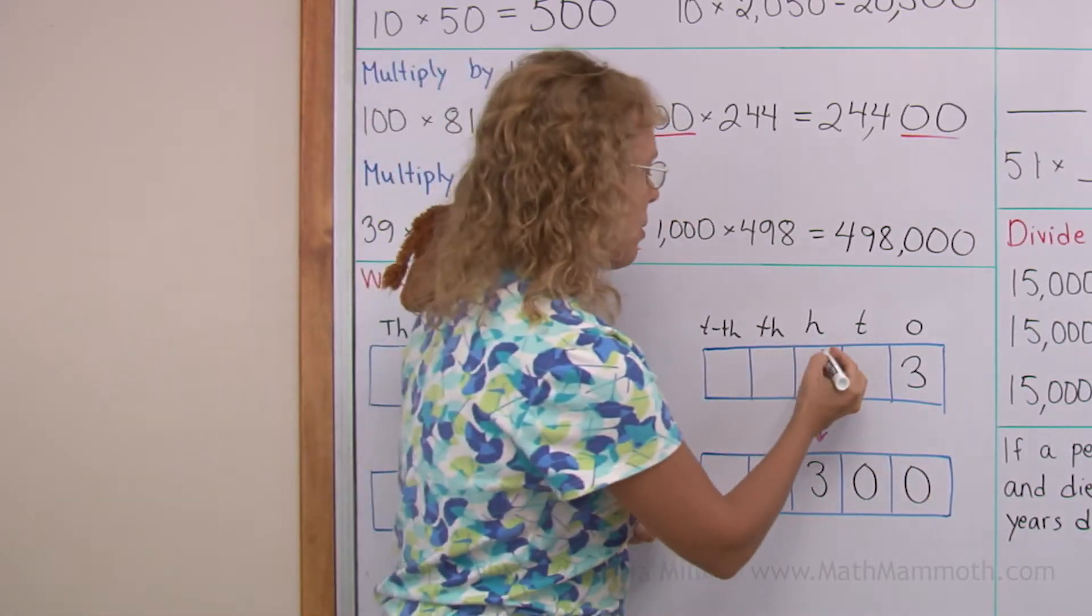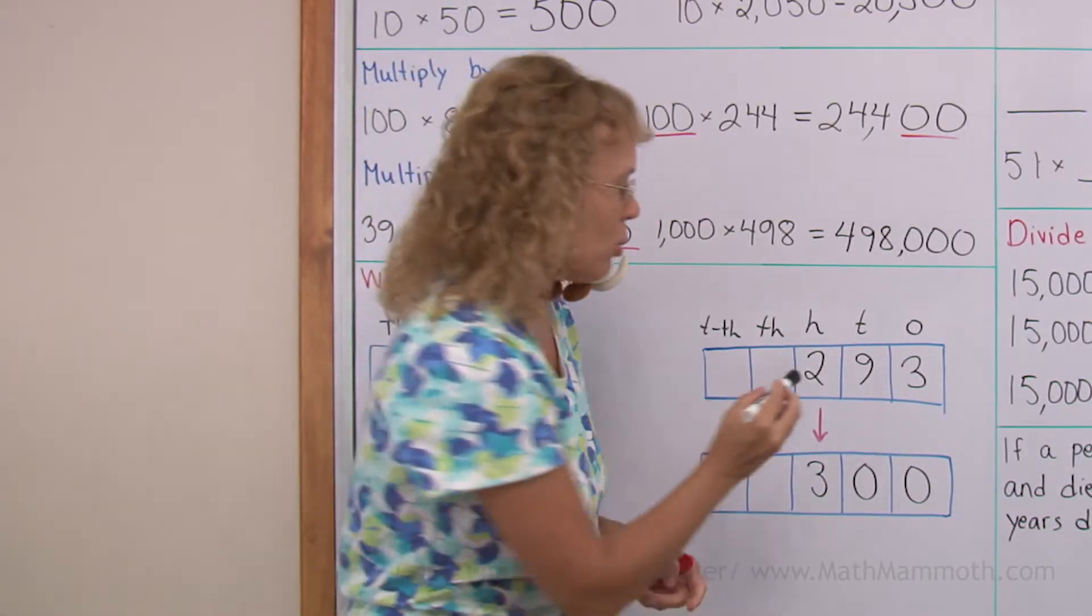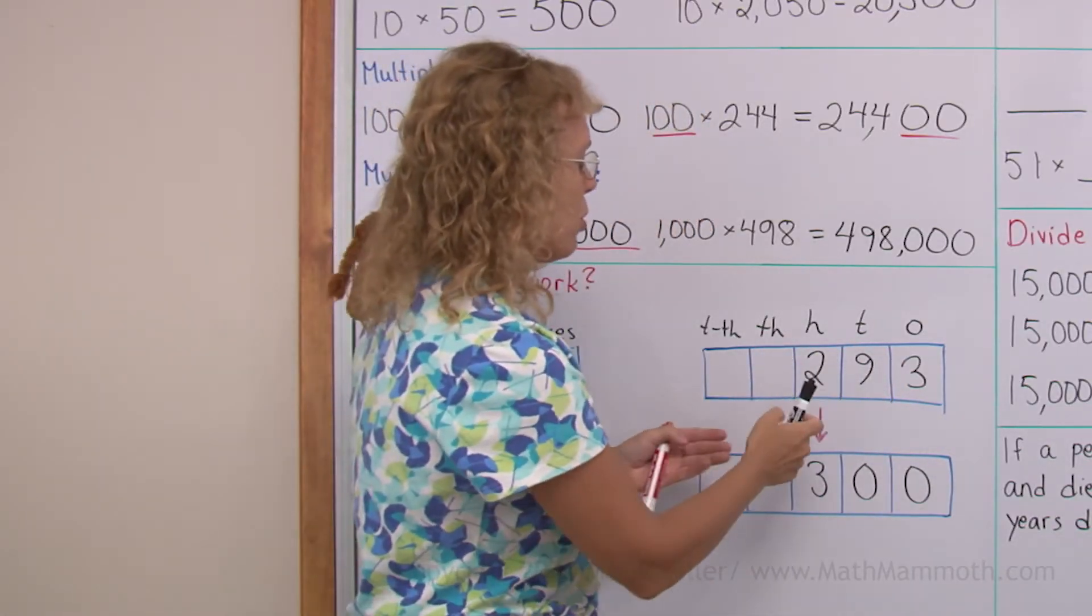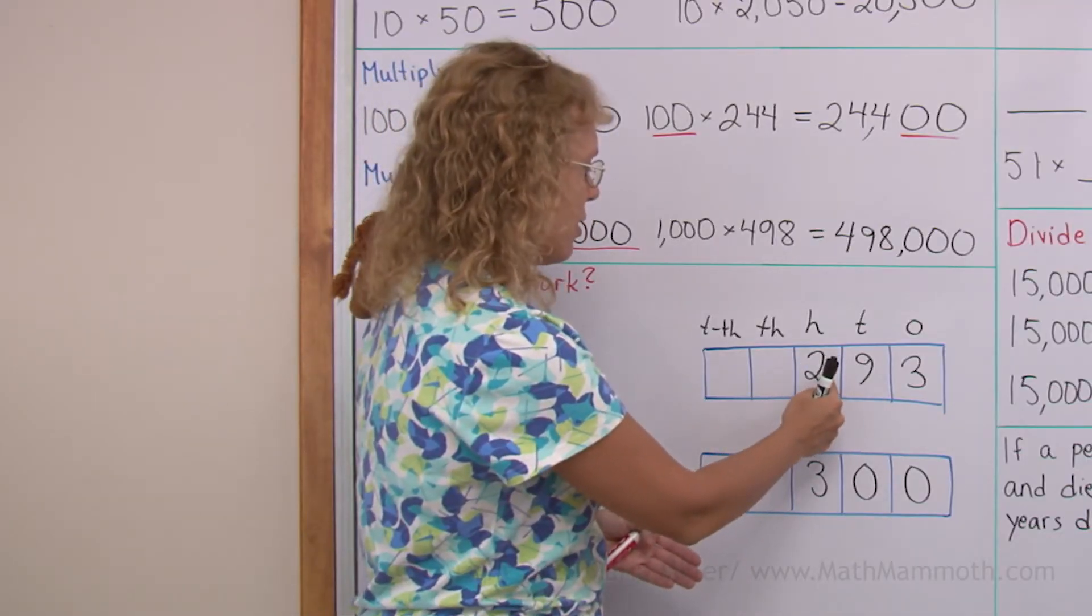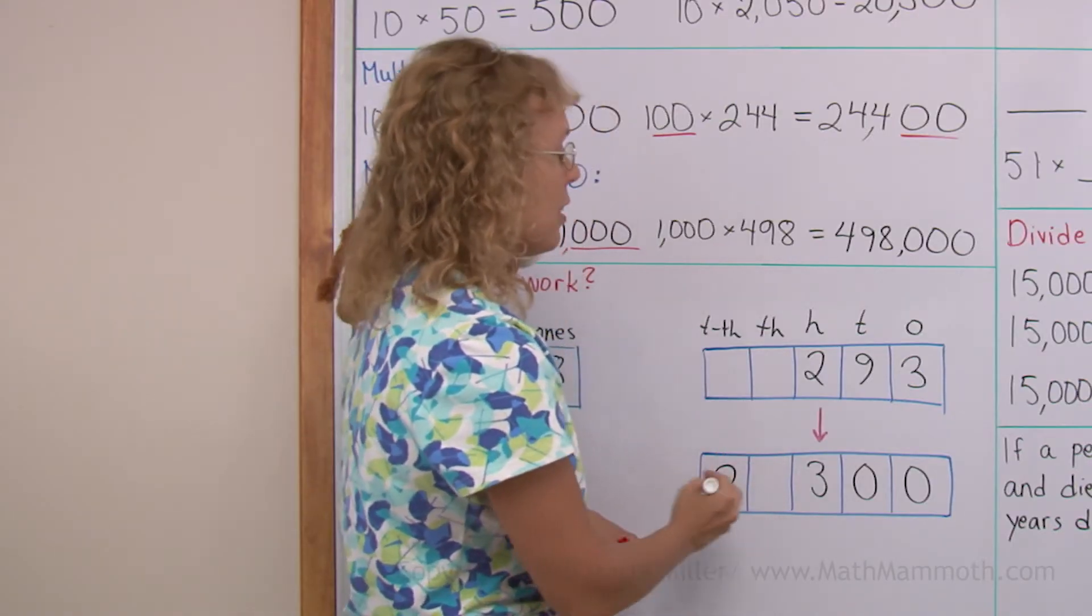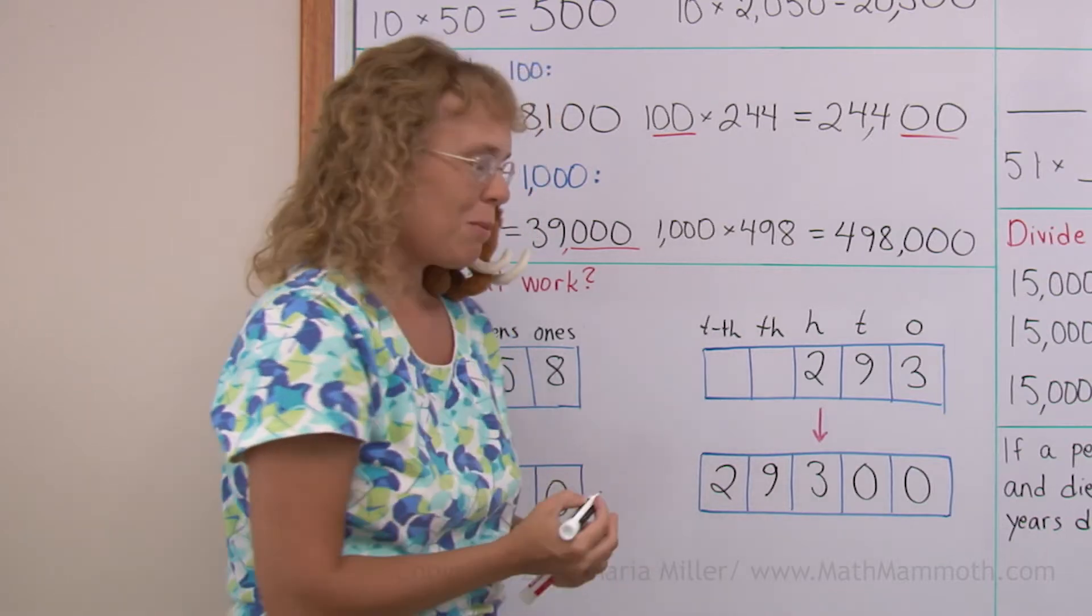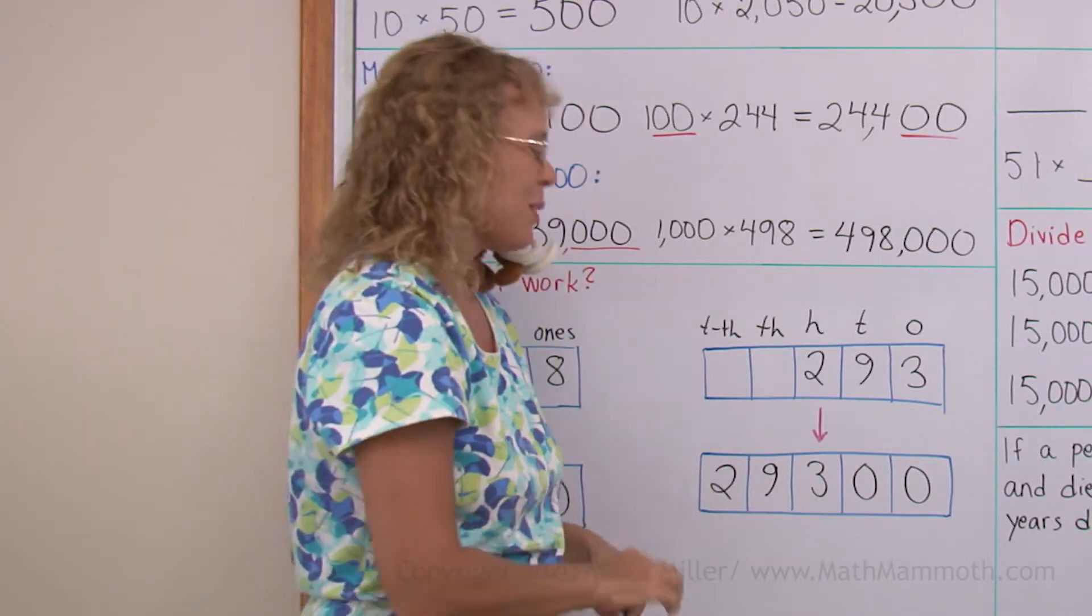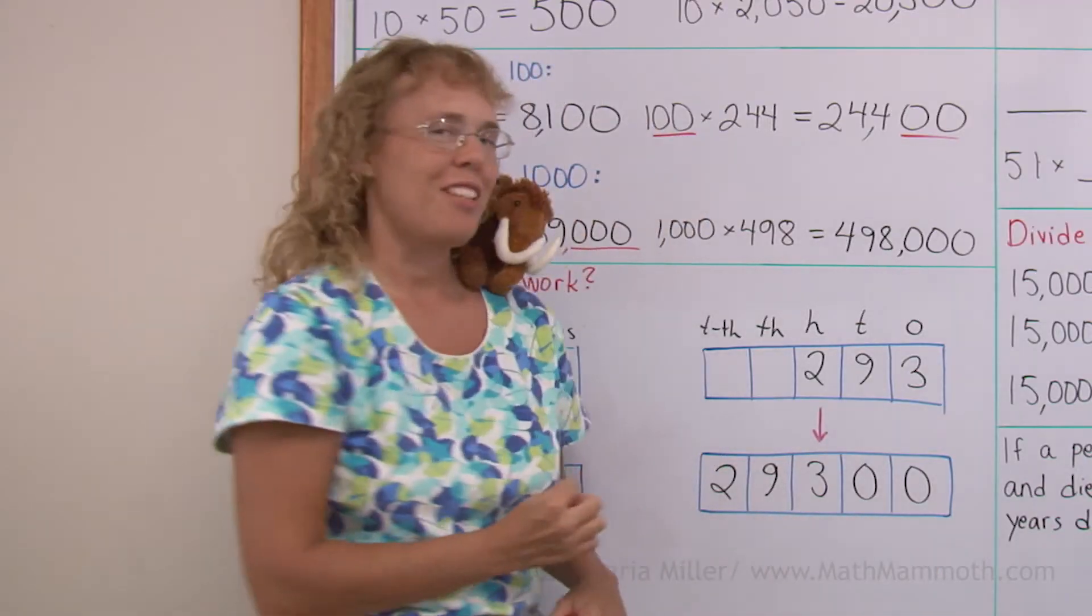This two hundreds becomes two here, two ten thousands, when multiplied by hundred. And nine tens becomes nine thousands, when multiplied by hundred. They move two steps, okay? But the shortcut is that you just write two zeros after the number.